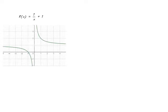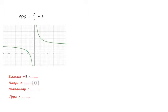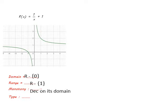For f(x) = 1/x + 1, the point of symmetry equals (0, 1), so the domain equals ℝ except 0 and the range equals ℝ except 1. The function decreases on its domain, or decreases on ℝ except 0. It is not symmetric about the y-axis or the origin, so the function is neither even nor odd.